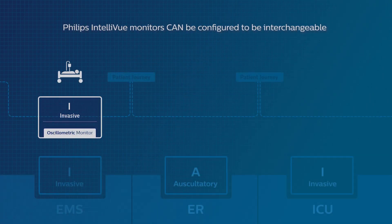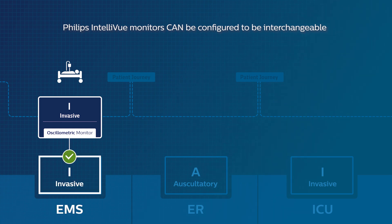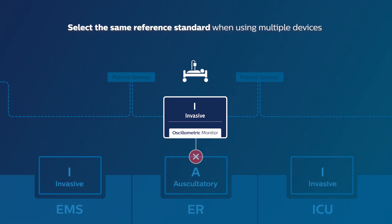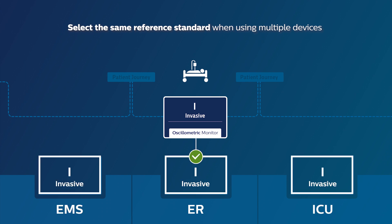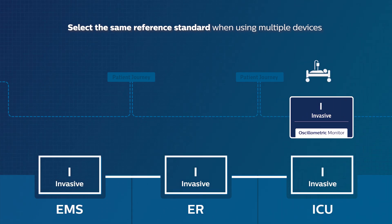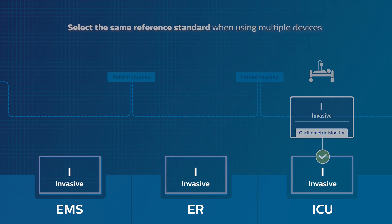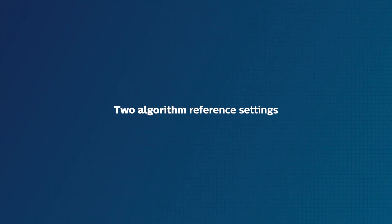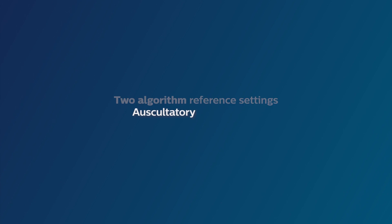Philips and Teleview monitors can be configured to be interchangeable by selecting the same reference standard algorithm on all devices. Intelliview users can choose from two algorithm reference settings: auscultatory and invasive.